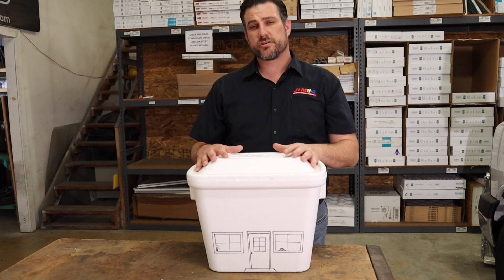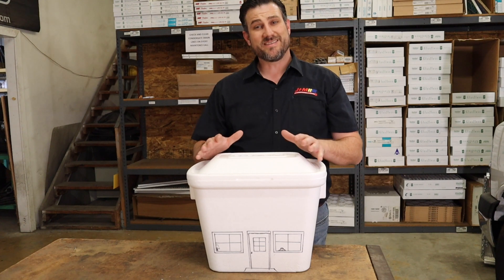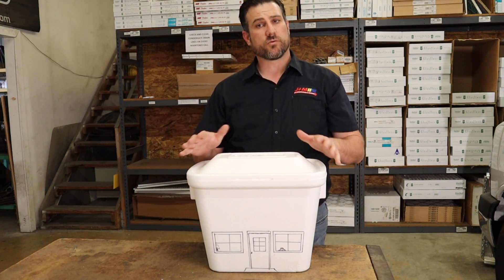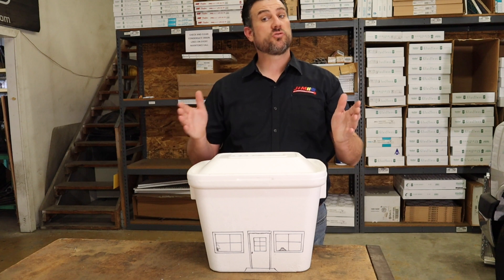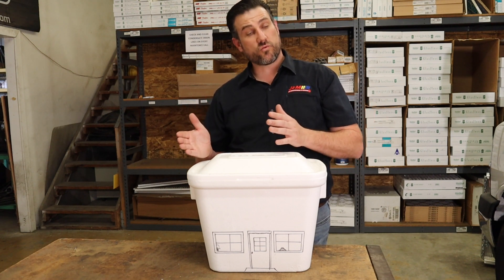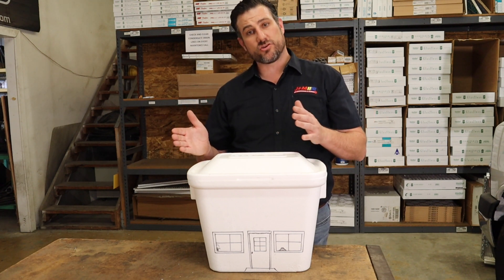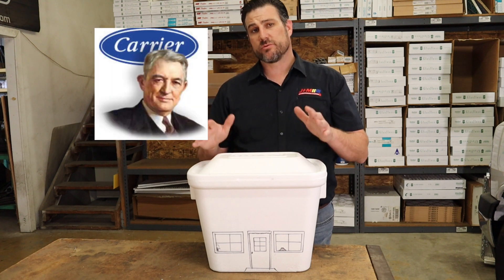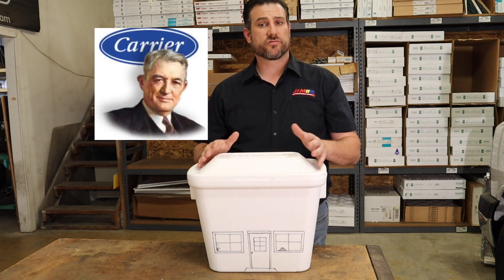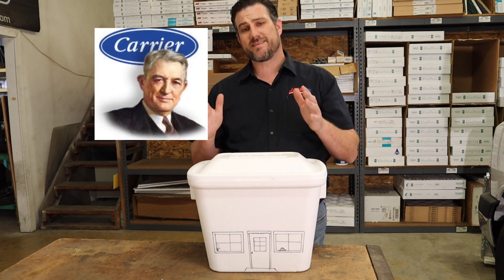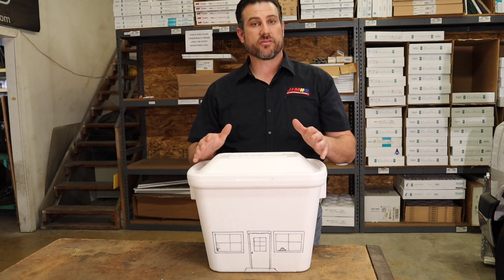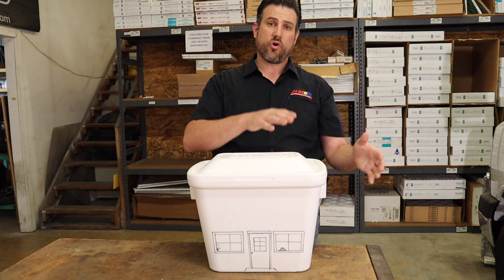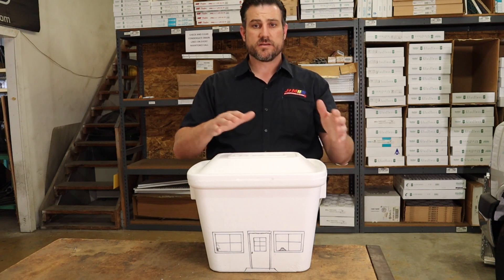Did you know the size of an air conditioning system is measured in tons? You may have heard this, but tons of what? Well, the answer is ice. Two tons of air conditioning is roughly equivalent to two tons of ice. When Willis Carrier invented air conditioning, he was replacing ice as the main source of cooling, so it makes sense. A good way to think about the size of your air conditioning system is how much ice you would need to put in your home to keep it cool.